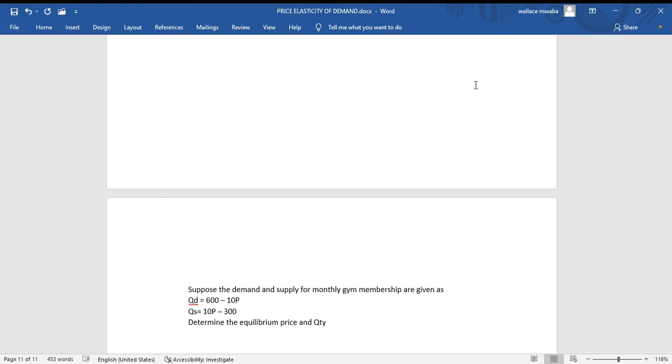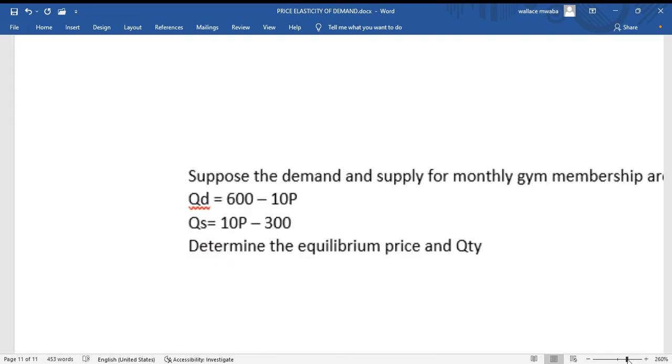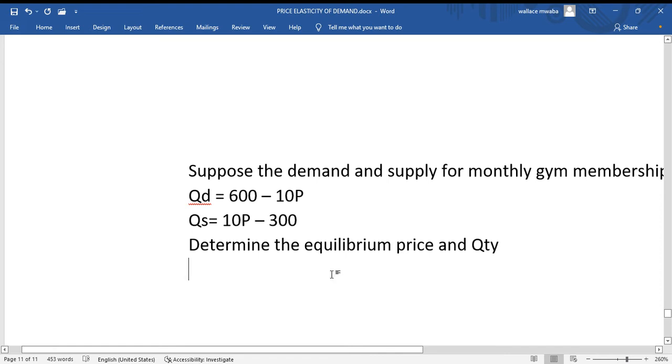Okay, let's say suppose the demand and supply for monthly gym membership are given as Qd equals 600 minus 10P and Qs equals 10P minus 300. We've been taught to determine the equilibrium price and quantity.